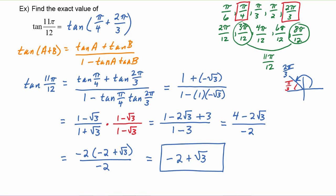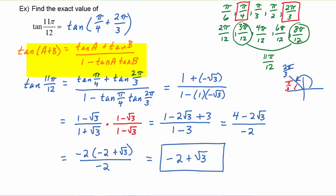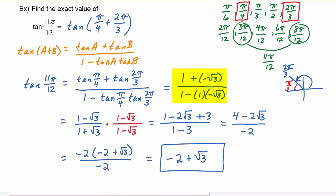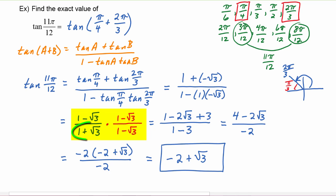Just a couple of reminders to help you be successful: be sure to write down the identity you're going to use first — it will help you remember to include all the parts. Then substitute in the angles and use your special angle chart for function values. You must rationalize — you can't leave radicals in the denominator. Use the conjugate when needed, and make sure you fully reduce each rational expression and leave your answer in simplest terms.